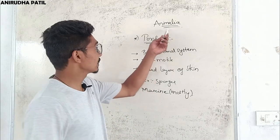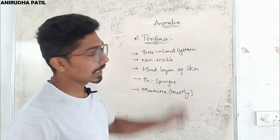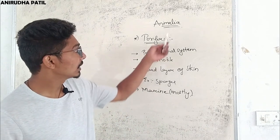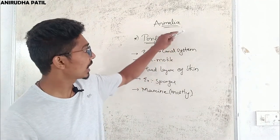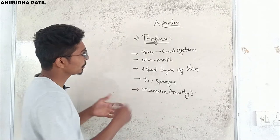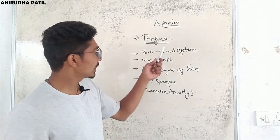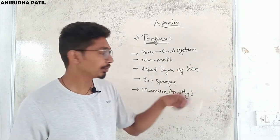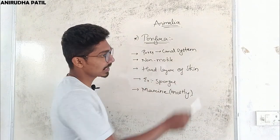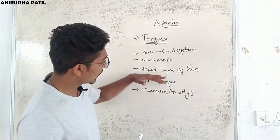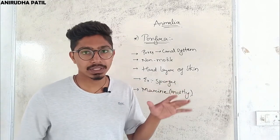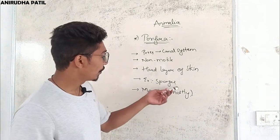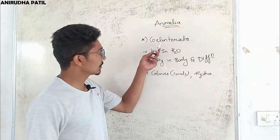Next is Kingdom Animalia, also called Kingdom Metazoa. Most organisms are heterotrophic, multicellular, and eukaryotic. They move from one place to another in higher groups, but in lower groups they are stationary. The first group is Porifera. The name suggests they are made up of pores, which give rise to a canal system helping circulate minerals. They are sessile — stationary — with a hard outer layer, and most are marine. An example is sponges.